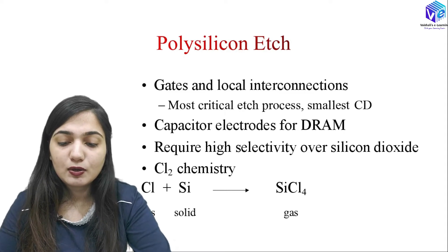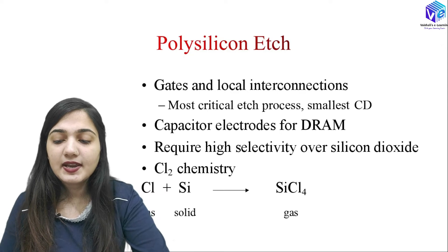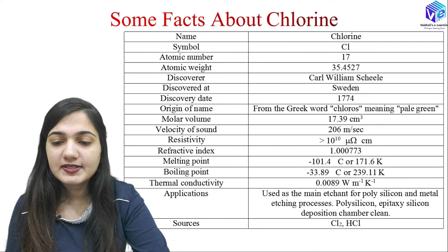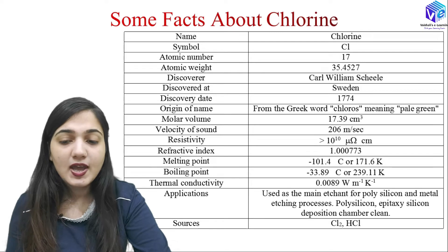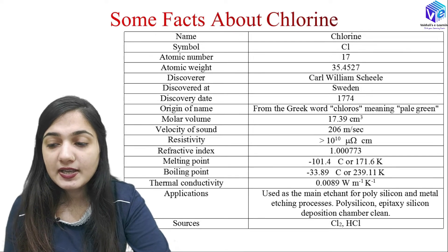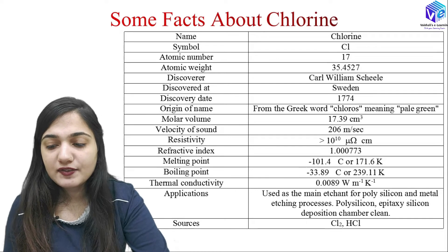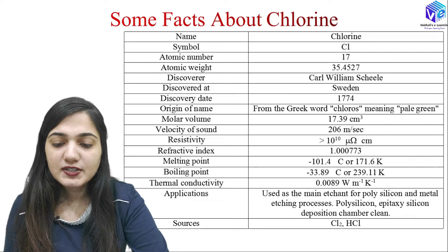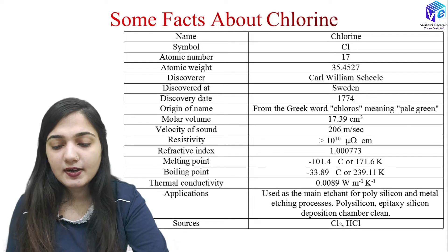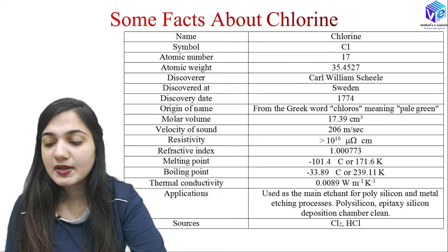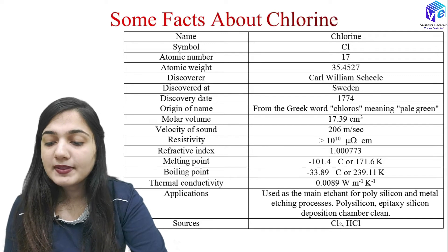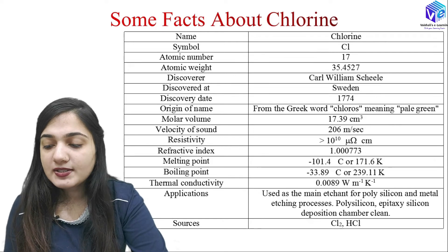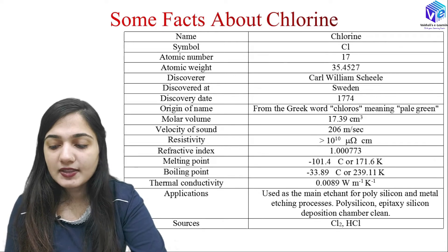For polysilicon etching we use the chlorine atom, which reacts with silicon to form SiCl4. The symbol for chlorine is Cl, atomic number 17, atomic weight around 35.45, discovered by Carl Wilhelm Scheele in Sweden in 1774. Other parameters include molar volume, velocity of sound, resistivity, refractive index, melting point, boiling point, and thermal conductivity. Chlorine is used as the main etchant for polysilicon, metal etching, epitaxial silicon deposition, and chamber cleaning. The sources are Cl2 as well as HCl.